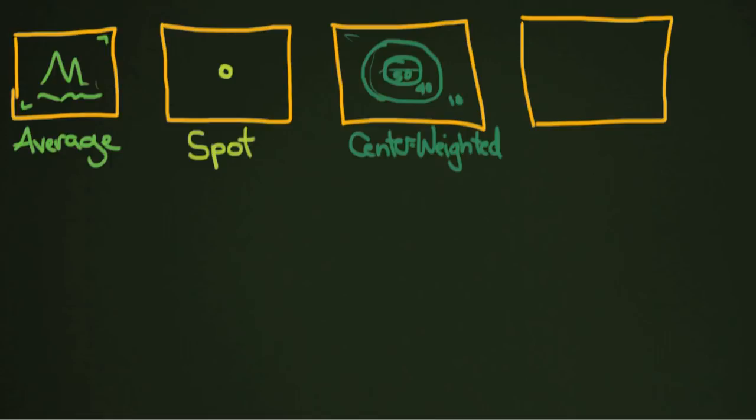Center-weighted works differently for different cameras and models. Every center-weighted meter works a little differently. I have to say center-weighted is my favorite way to meter things because I feel like I understand that metering system a little better. It's also the one I've always used since I was first doing photography. But the other ones are great too. I also use a lot of spot photography and I never use my averaging meter.